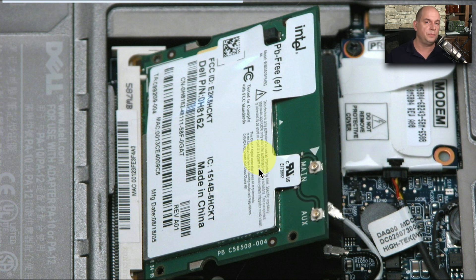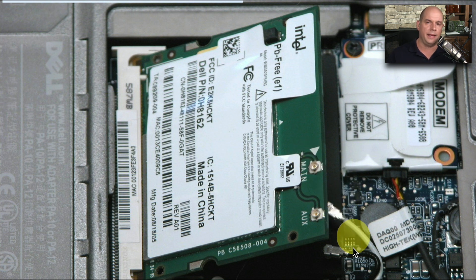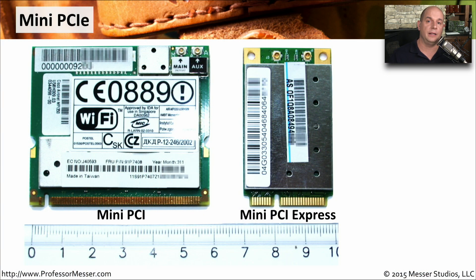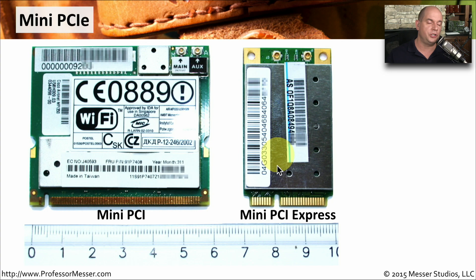This is a view just before installing the card, where you've placed it into the slot. Then you push down to make it flat, and it snaps in place, allowing you to add the antenna wires once the adapter is installed. You'll generally find two different form factors for these adapter cards: the mini PCI adapter and the smaller, newer mini PCI Express adapter.